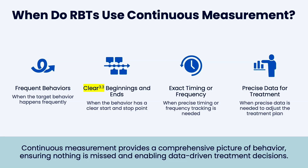Continuous measurement is harder to do, but we use it for very frequent behaviors when the target behavior has a clear beginning and end. When a behavior has a clear start and stop point, we want exact timing or frequency. Especially with really severe behaviors, we want precise tracking to know if the intervention is working quickly because it's dangerous. Frequent behaviors are also great candidates for frequency counting.